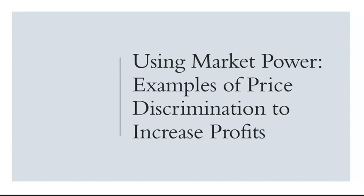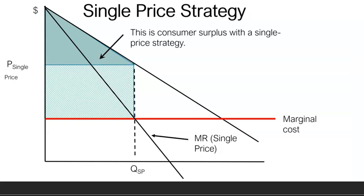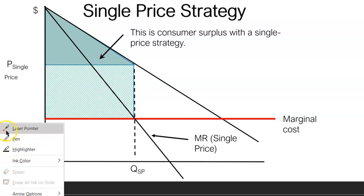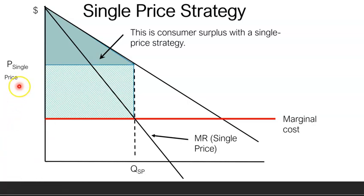Instead of just charging a single price for their product, what a lot of businesses are able to do is to discriminate among their customers and to charge different prices. Let's quickly review what I'll call the single price strategy — the case where the firm just charges a single profit-maximizing price. That's the case of a monopoly, in which I've described marginal costs as constant.